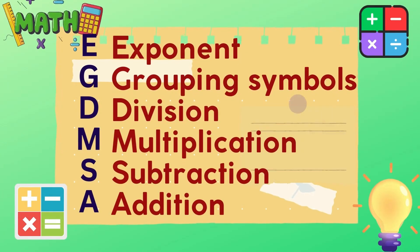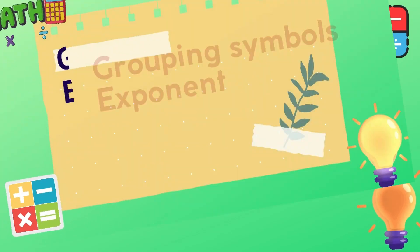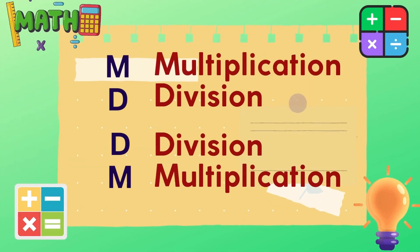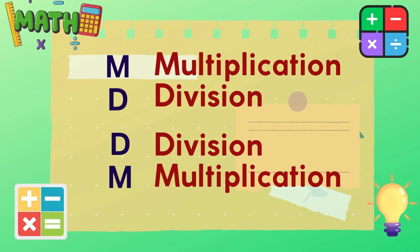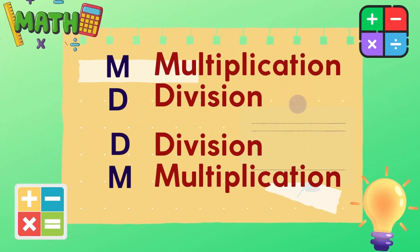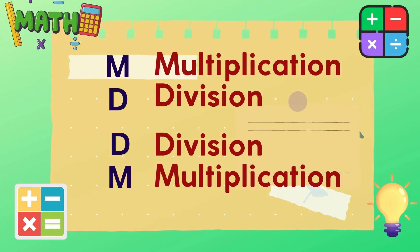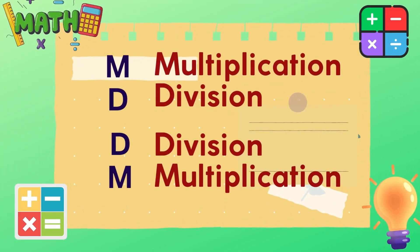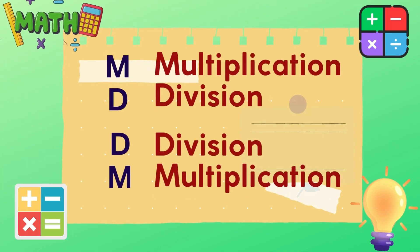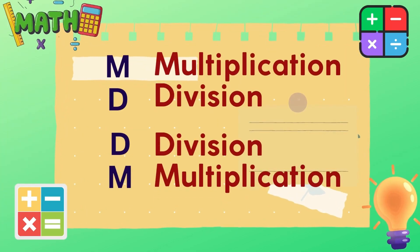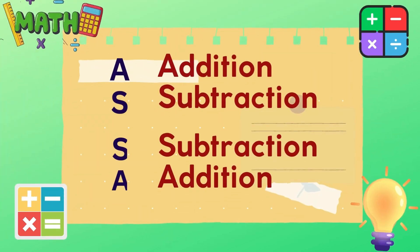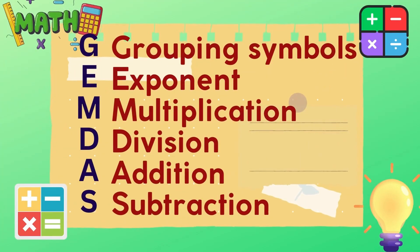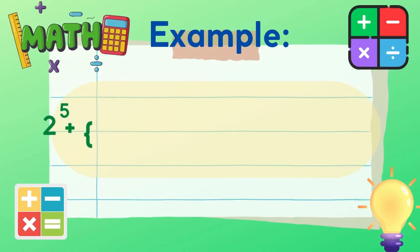still following which one comes first from left. Afterwards, all operations involving multiplication and division should be performed next, whichever comes first from left to right. After performing all the operations inside the grouping symbols and those involving multiplication and division, addition and subtraction will be the last to perform, whichever comes first from left. Let's have this example.